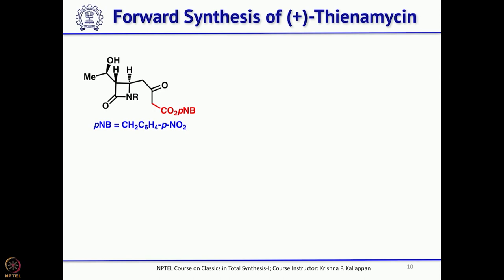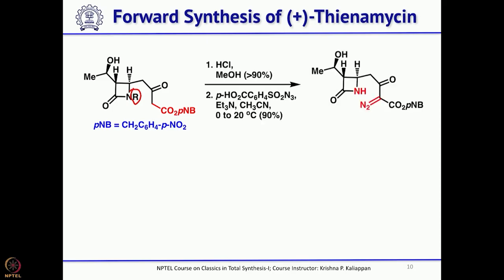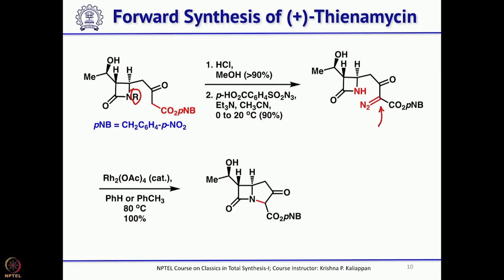For introduction of the diazo carbonyl, the TBDMS group was removed with HCl/methanol, then para-toluenesulfonyl azide with triethylamine introduces the diazo group. Treatment with dirhodium tetraacetate forms the carbene, and NH insertion immediately takes place to give the 5-membered ring — a very interesting method to construct the 5-membered ring.